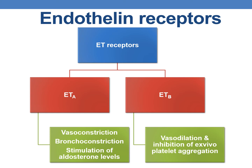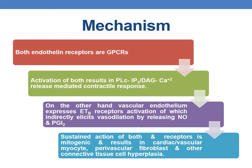ETA receptors are mainly involved in vasoconstriction, bronchoconstriction, and stimulation of aldosterone levels, whereas ETB receptors are involved in vasodilation and inhibition of platelet aggregation. Both endothelin receptors are G protein coupled receptors; activation of both results in PLC-IP3-DAG and calcium ion release-mediated contractile response. Vascular endothelium ETB receptor activation elicits vasodilation by releasing nitric oxide and PGI2, explaining the initial BP fall with IV ET1. Sustained activation of both receptors is mitogenic, resulting in tissue hyperplasia in cardiac and vascular myocytes, perivascular fibroblasts, and other connective tissue.